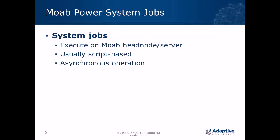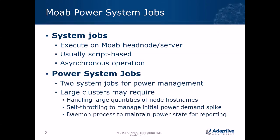A generic system job is a job that is not a user job. You're not going to see it in a queue waiting to execute. It executes on the Moab head node or server where Moab is running. It's usually script-based, and most system jobs are asynchronous — Moab starts one up and then goes on its way while that system job executes. There are two system jobs used for power management.